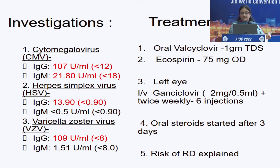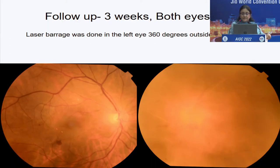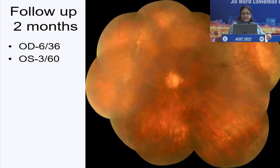The patient underwent a whole gamut of investigations which confirmed the presence of a viral infection. The patient was treated with oral valacyclovir, ecosprin was continued, and intravitreal antiviral injections were given. The patient was also started on oral steroids and the risk of RD was explained. Follow-up at three weeks showed vision in both eyes had dropped to 3/60.